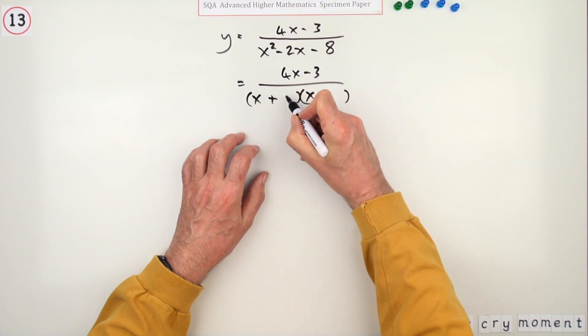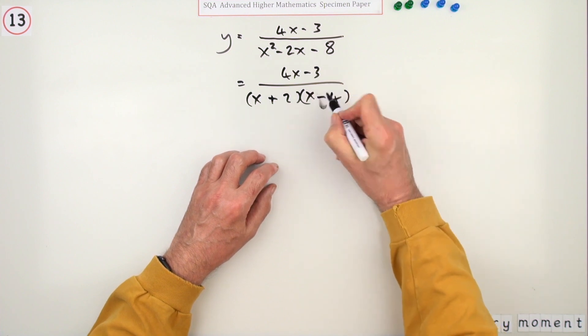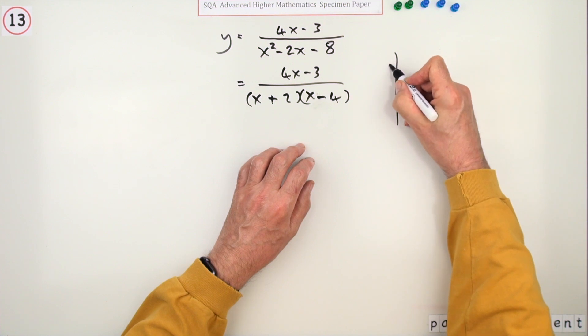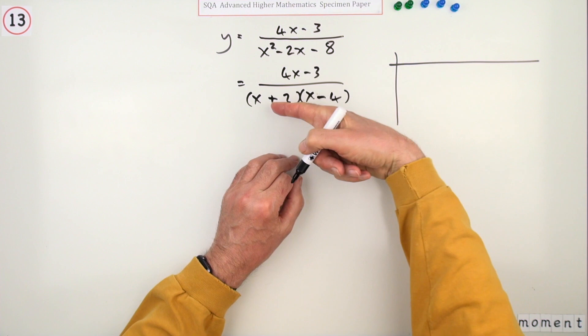So that was what that was: x plus 2, x minus 4. Maybe slopey minus there, it's even worse. I should like the slopey minus.